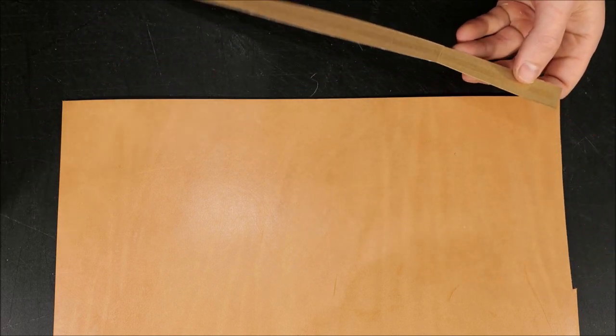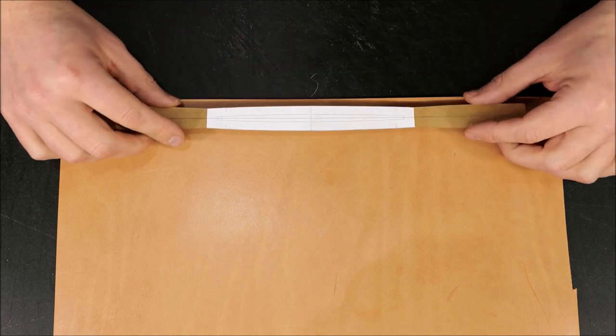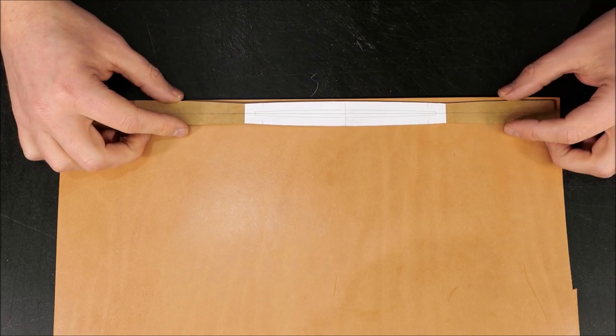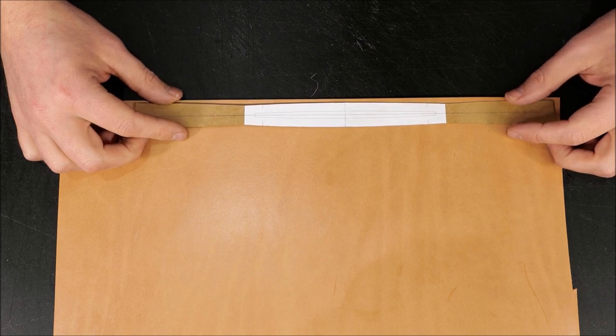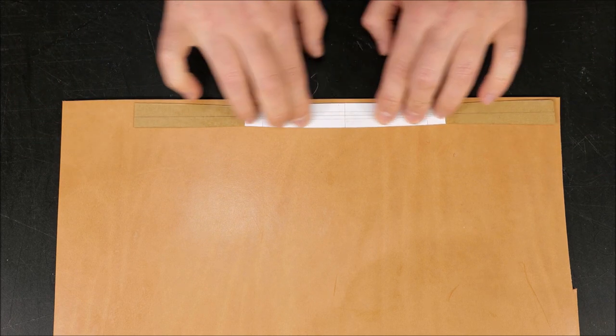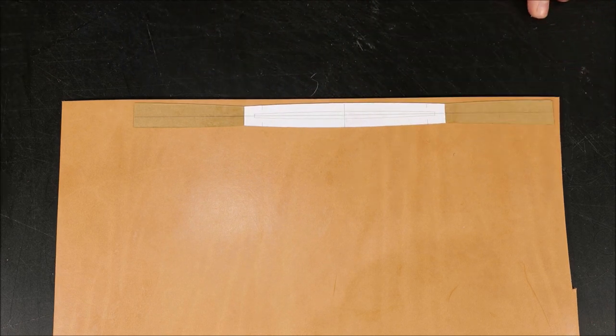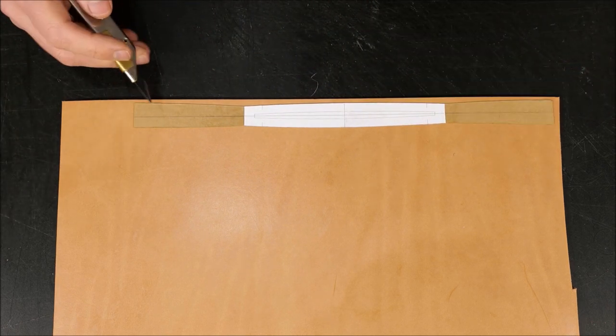So taking our backing tape off there, placing it down reasonably close to the edge to give us the best yield, so we're not wasting too much leather basically. Now you can simply go around the leather and cut everything out.